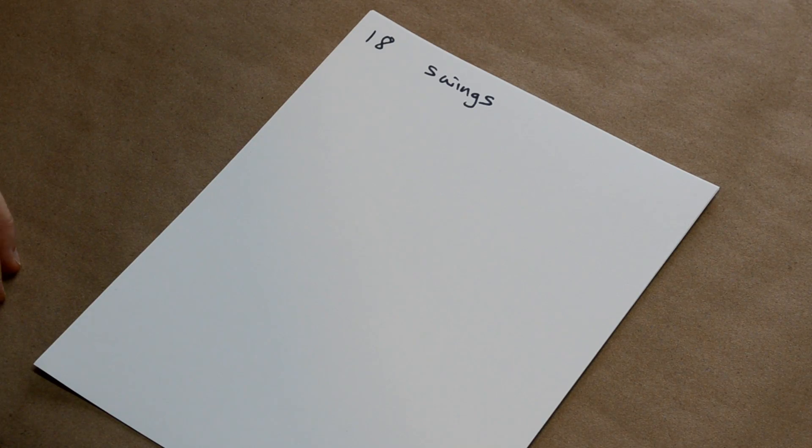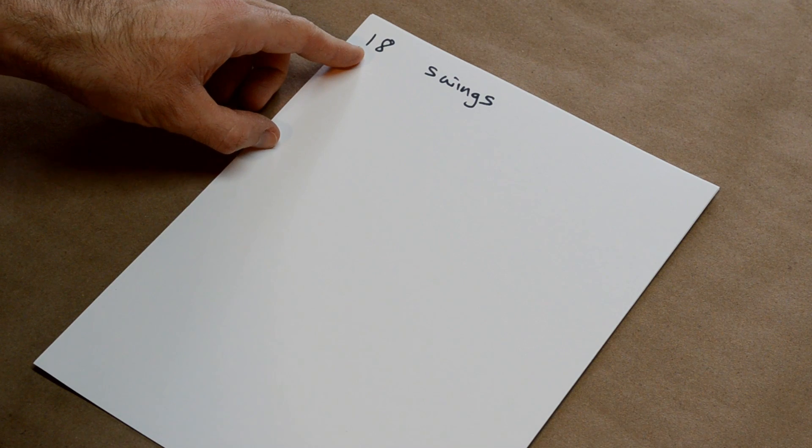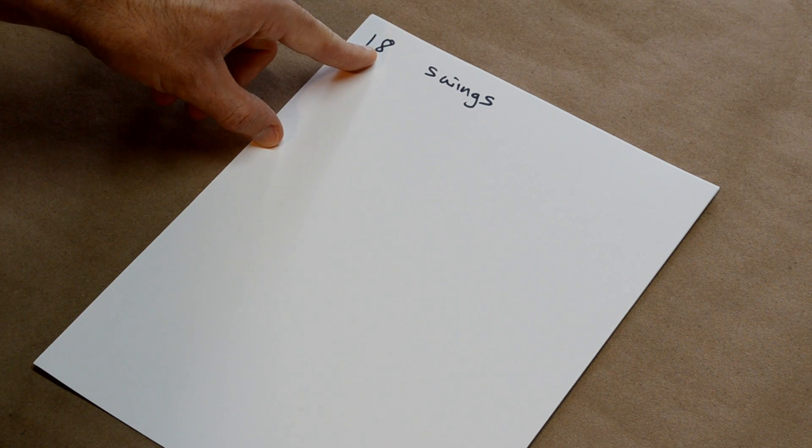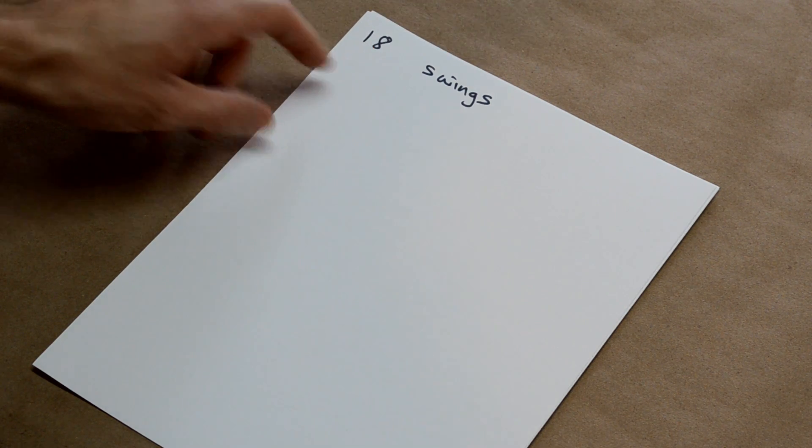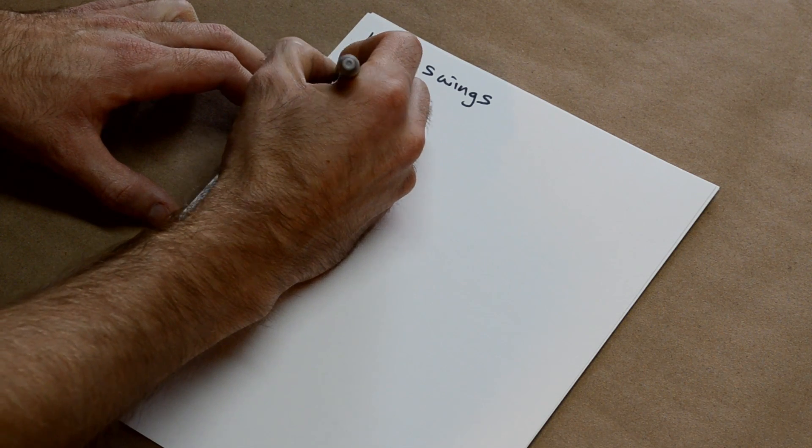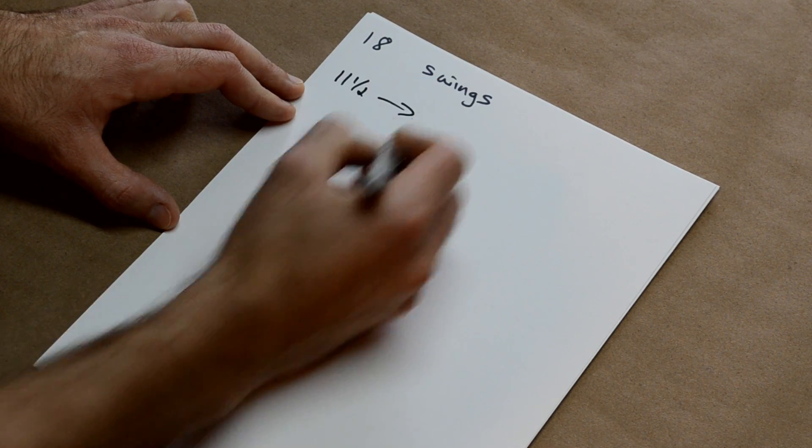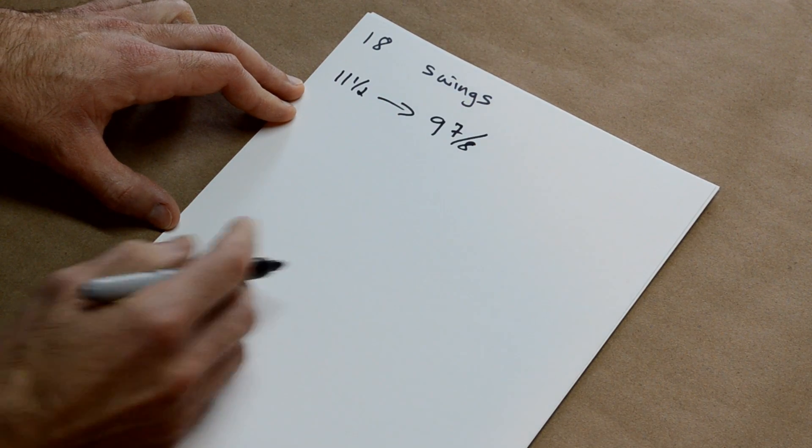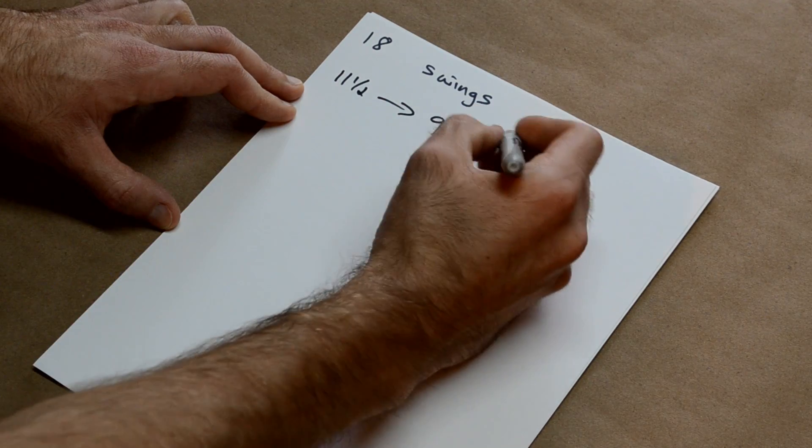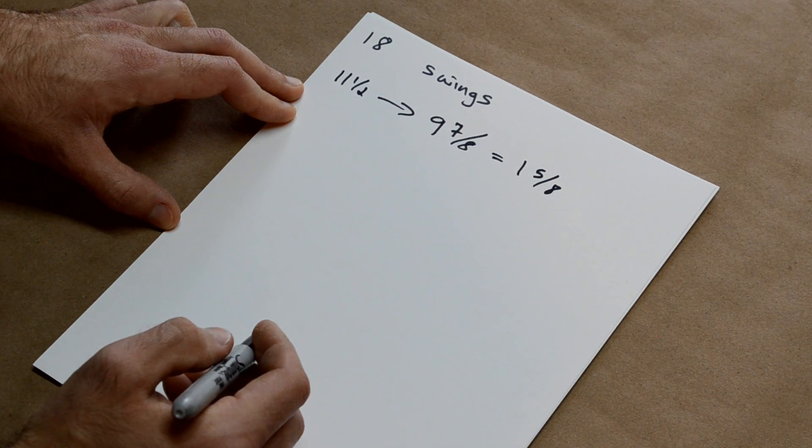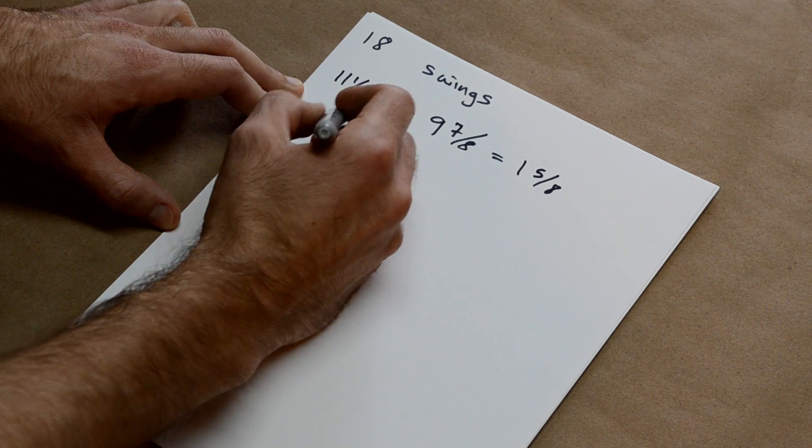We did our experiment, and we know that it took eighteen swings one time, and nineteen the other, to decay that distance. So we're going to go with eighteen to be conservative. And during that, it went from eleven and a half inches high over to nine and seven eighths, which is also a little bit conservative. So that's an inch and five eighths of vertical height lost.